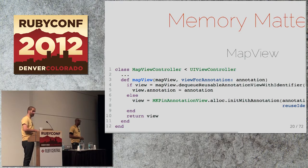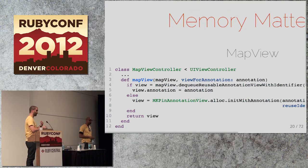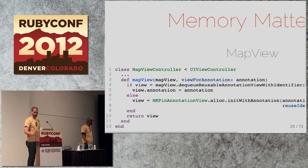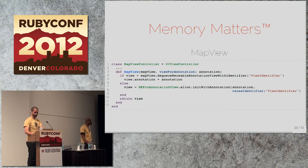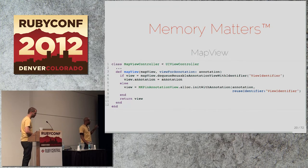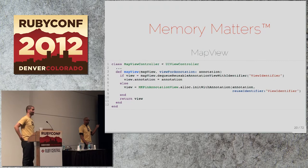In 'mapView:viewForAnnotation:', you first try to dequeue a reusable annotation view with an identifier. If you get one, set the annotation and configure it — that means you have one that's no longer visible on the map and can be reused. If you get nil, instantiate a new one with the reuse identifier. This keeps a queue of recently-seen annotations, so when you need to show a new one elsewhere on the map it can reuse a recycled view.